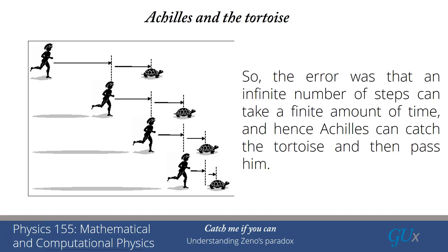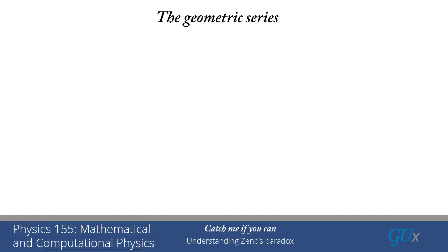So how do we get this mathematical result? The error that we had in the argument was that the infinite number of steps actually only takes a finite amount of time. It doesn't take an infinite amount of time. So Achilles can easily catch the tortoise and then pass it. Okay, so the key to this argument was the ability to sum the geometric series. So how do we do this mathematical argument?